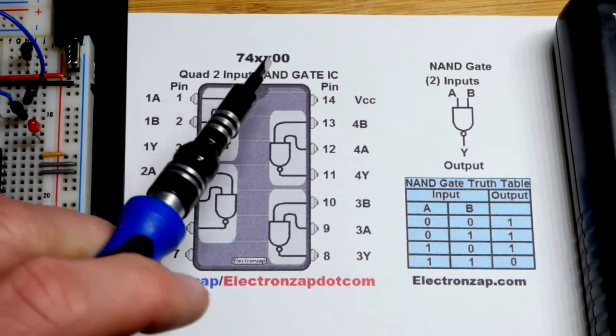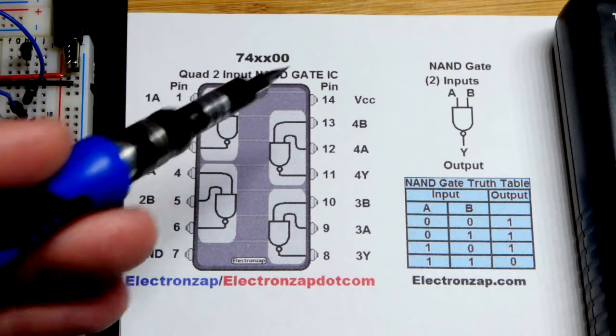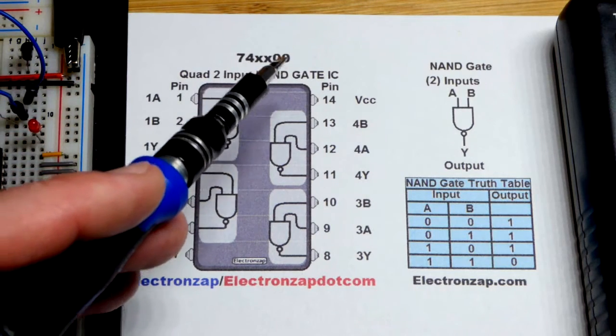Now in this video we're going to look at the 7400 integrated circuit. So there's the 7400 series. This is the first one, 00.